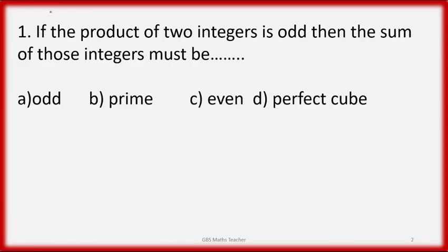The first question is: if the product of two integers is odd, then the sum of those integers must be — odd, prime, even, or a perfect cube? Let's think carefully about this.